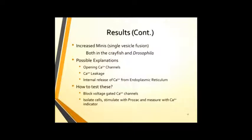How to test these now? We first can block the voltage-gated calcium channels on the motor neuron and the nerve terminals, which will allow us to see whether the calcium intake is coming from external or internal source. We can also isolate these cells, stimulate them with Prozac, and measure with a calcium indicator to further back this up, and also to determine what place inside the endoplasmic reticulum calcium could be coming from.